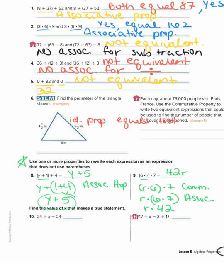Last two: find the value of x that makes the statement true. 24 plus what equals itself? x would be 0 by the identity property. Number 11: 17 plus x equals 3 plus 17 — x should be 3 by the commutative property. Thank you.